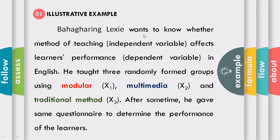A teacher wants to know whether the method of teaching — the modality of instruction — affects learner performance. In teaching English, he randomly selects and forms three groups: one exposed using modular approach, one using multimedia instruction, and one using traditional method.